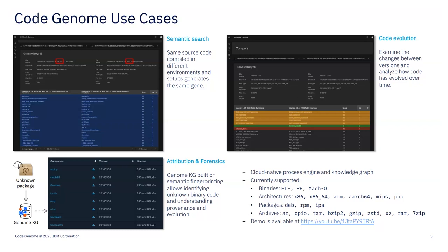Another use case we've demonstrated is code evolution — examining the changes between different versions of a program, using the knowledge graph to understand how things evolved and to move forward or backward in understanding your software. The last aspect is attribution and forensics: given an unknown piece of software, you analyze the package to identify commonalities between what you find there and what you've already ingested, allowing you to attribute known software packages and functionality to new, previously unseen code.